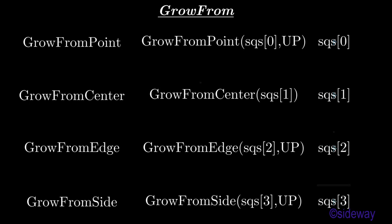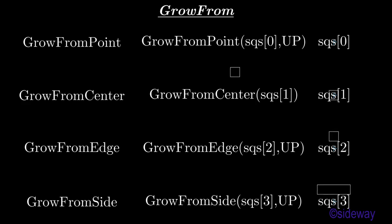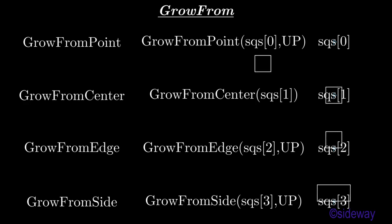GrowFromPoint method is used to grow a mathematical object at a specified point animatedly. GrowFromCenter method is used to grow a mathematical object at center animatedly.